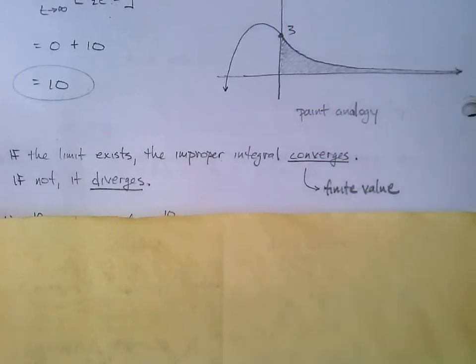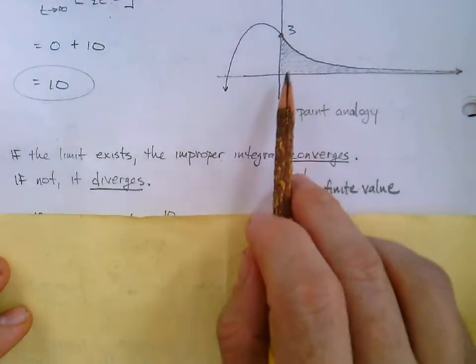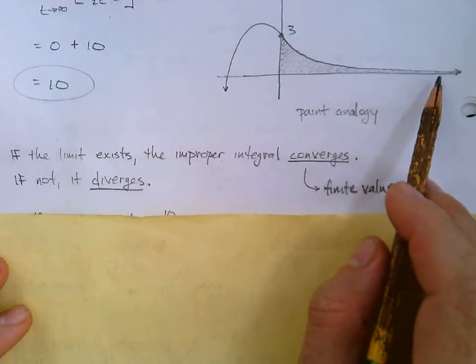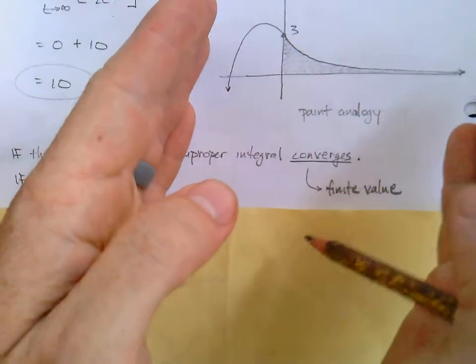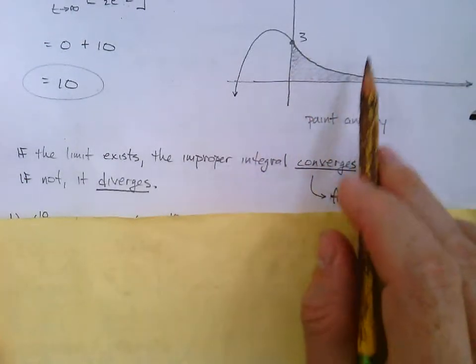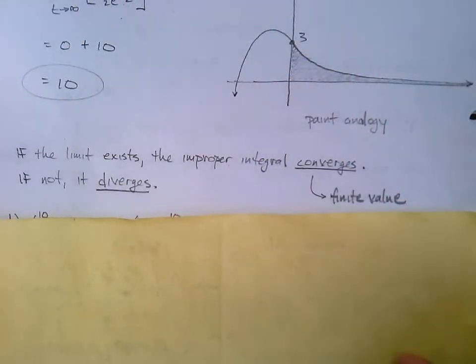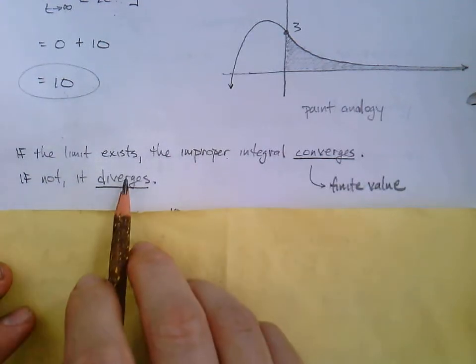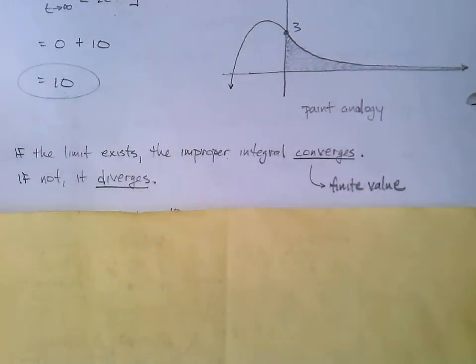I think a lot of students get that language, converge and diverge. Even though this is stretched out infinitely far, this area, if we were to push it back in from infinity, we could fit it into just a finite little space. So it converges, like it all kind of gathers together. If it diverges, that means there's just an infinite amount of area, and you can't gather it all up.